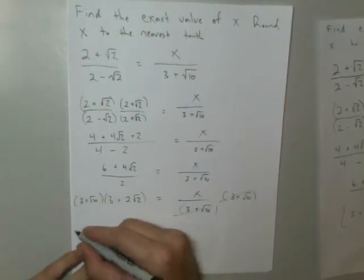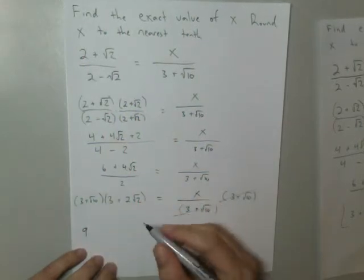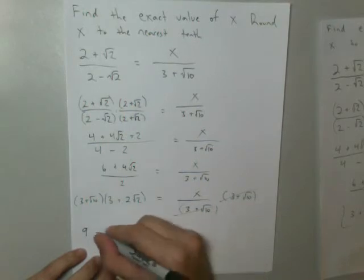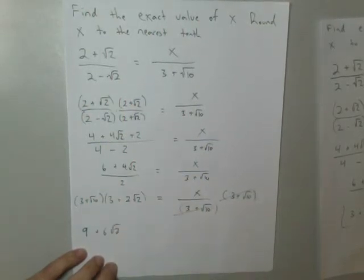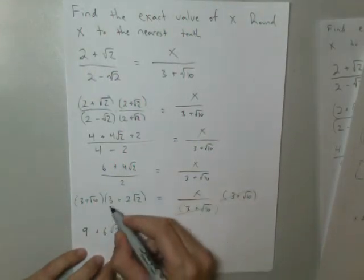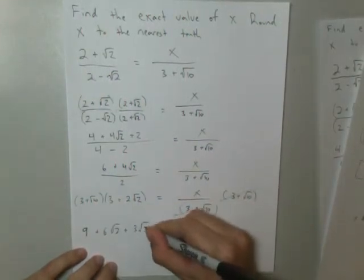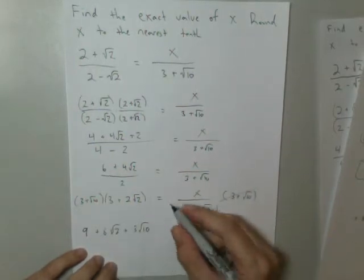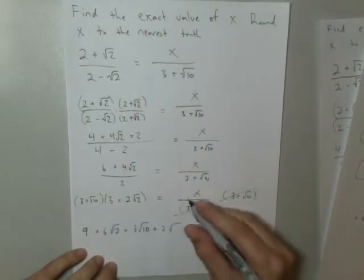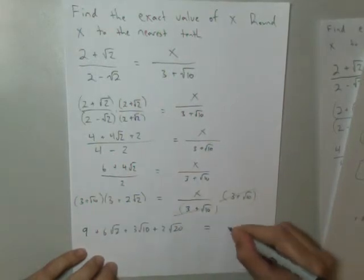3 times 3 is 9. Outside, 3 times 2 root 2 is plus 6 times the square root of 2. Inside is plus 3 times the square root of 10. And then last times last, 2 square root of 10 times 2, or 20, which is x.